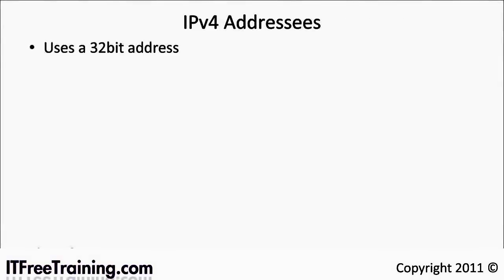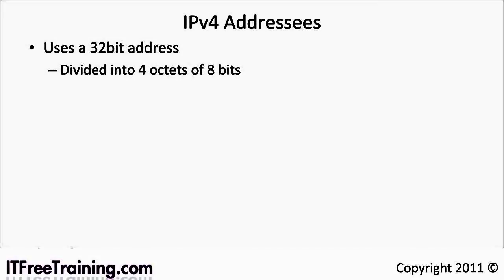IP version 4 addresses are 32 bits long. They are divided into 4 octets of 8 bits separated by dots to make reading easier. For example, 192.168.0.1. An IP address identifies your computer and allows other computers to contact yours. Think of it like a telephone number. Telephone numbers have area codes while IP addresses have network IDs to help separate and organize your network into logical parts.